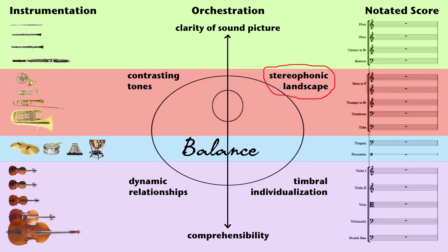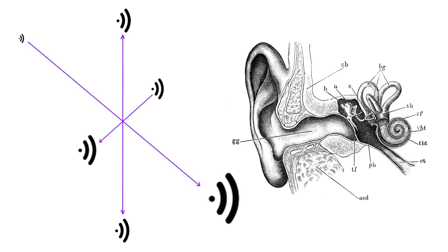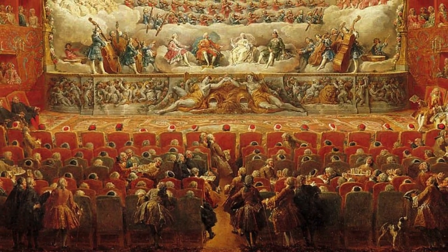We hear binaurally. And what's more, each of our ears is structured so that we can hear direction in sound: up or down, ahead or behind, far or near. This makes music a three-dimensional experience, especially for a listener sitting in the sweet spot of a concert hall with great acoustics.